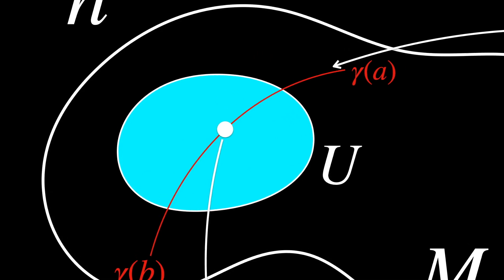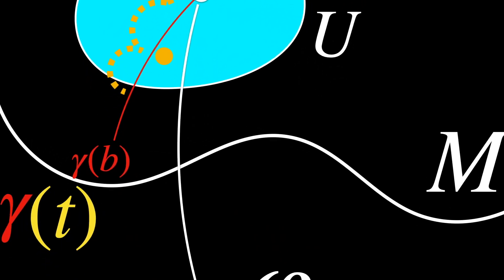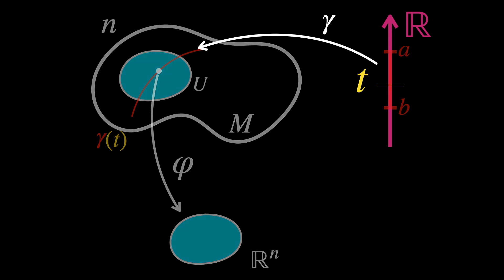Now, we want to imagine that we are walking along this curve, but not on M directly, but on the local coordinates. In other words, this mapping to Euclidean space we talked about earlier. We take Gamma of T, the curve on the manifold M, and Phi, the coordinate map that takes points from the manifold and maps them to local coordinates in Rn.